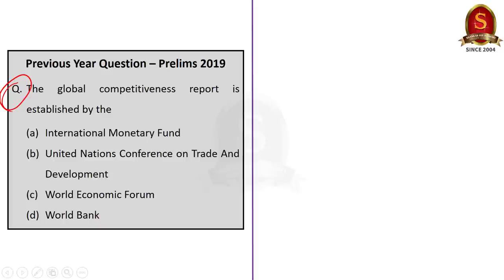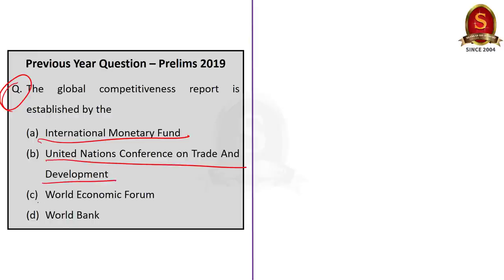Look at the question. The Global Competitiveness Report is published by: Option A — International Monetary Fund, Option B — United Nations Conference on Trade and Development, Option C — World Economic Forum, and Option D — World Bank. The correct answer for the question is Option C, that is World Economic Forum.